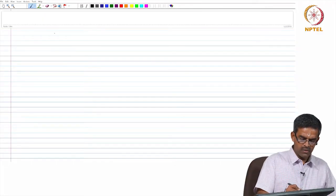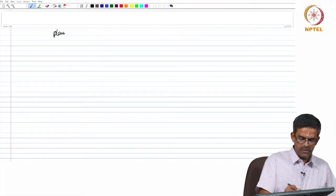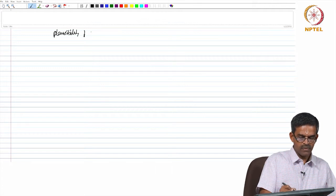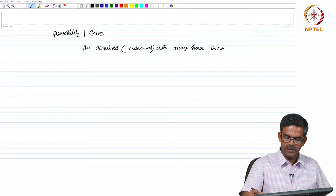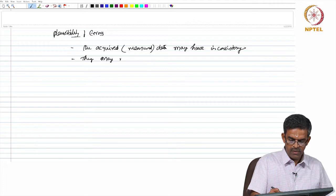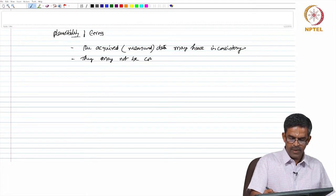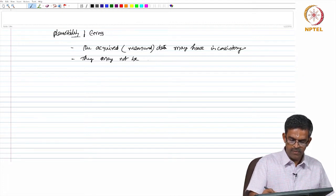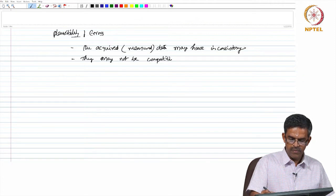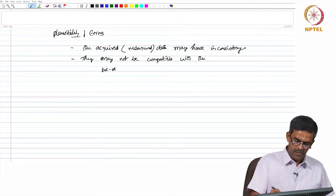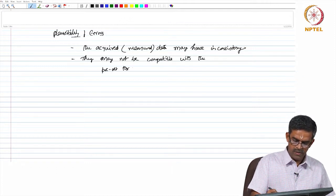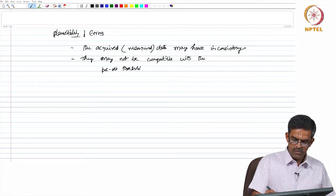When I talk about plausibility of errors, they may have inconsistency. They may not be compatible with the preset threshold values.